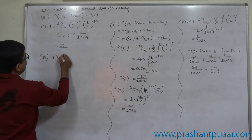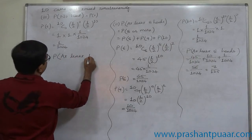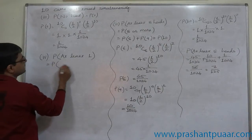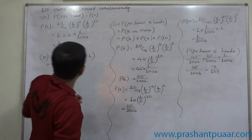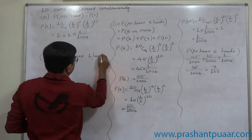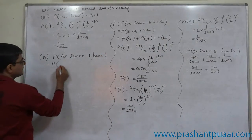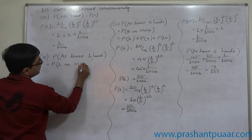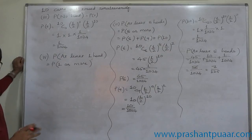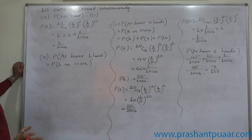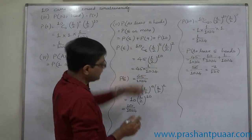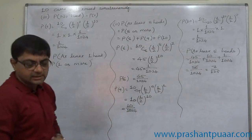Fourth case: probability of at least one head. 'At least one' means one or more, so r can be 1, 2, 3, … up to 10. If we followed the direct pattern, we would need to calculate 10 separate probabilities and add them — but there is a simpler approach.